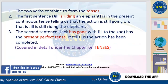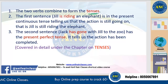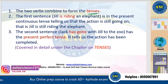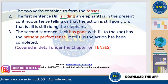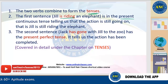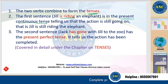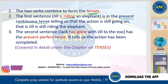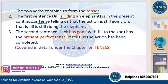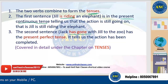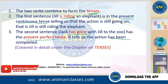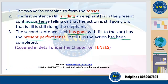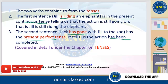The two verbs combine to form the tenses. In 'Jill is riding an elephant' — present continuous — the action is still going on, not yet completed. In 'Jack has gone with Jill to the zoo' — present perfect — the action has been completed in the recent past. We will talk about tenses in detail in the tenses chapter — right now we are dealing only with verbs.